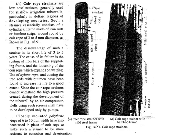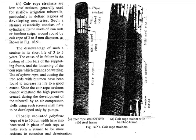To increase its life, using nylon rope instead of coir and coating the iron rod with bitumen has been found to increase its life beyond three to five years. Also, the coir rope strainer cannot withstand high pressure created during the development of the tube well by air compression, so the well screen must be developed only by pumps — high-pressure pumps cannot be used. Those are the four basic types of strainer type well screens. We will cover the next topic in the next video.